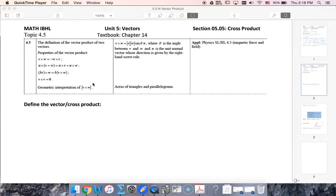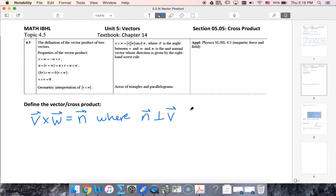The vector product is defined to be a vector perpendicular to two other vectors. The vector product, or cross product, uses the cross symbol and results in a new vector that is perpendicular to both of the old vectors.